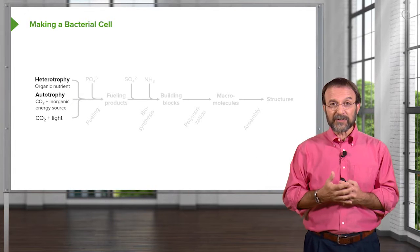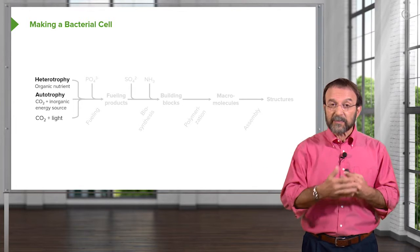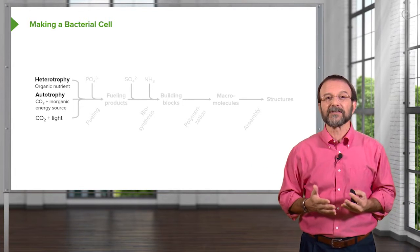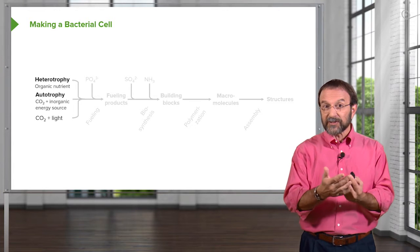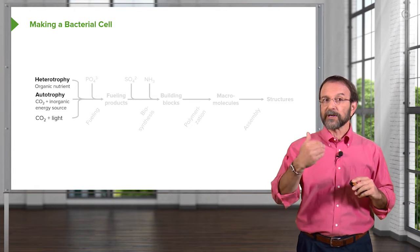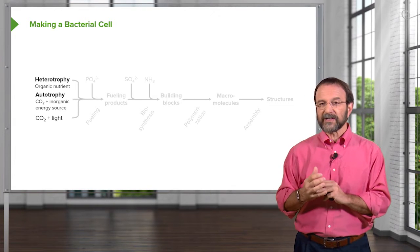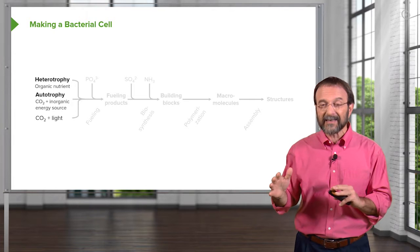To make a new cell, you have to make all the new components. And this is a complicated process, but we can simplify it for our discussion today. There are two general strategies for building new bacterial cells. There's what we call heterotrophy, and that's where the bacteria has to get all the nutrients it needs. It can't make any of them.